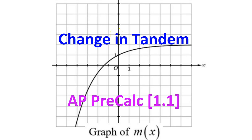In this video, we will continue our discussion of change in tandem — in other words, how quantities change together. For example, this graph of m of x is both concave down and increasing. This is AP Precalculus Topic 1.1.